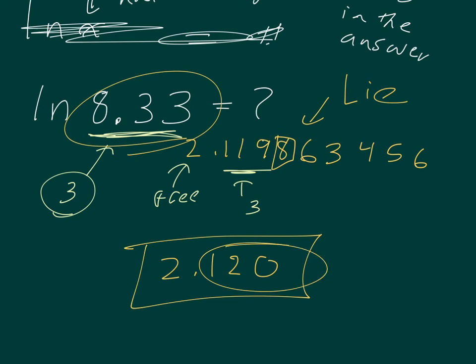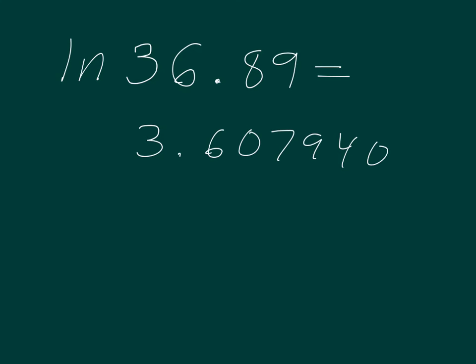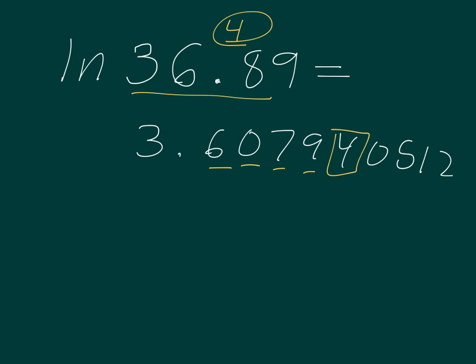Let's make sure. The natural log of 36.89 would be — I go to my calculator, punch in natural log 36.89 — and I get 3.607940512 back. I have four sig figs here, so I should have four decimal places: 1, 2, 3, 4. Round on the basis of the 4, and my correct answer is 3.6079.